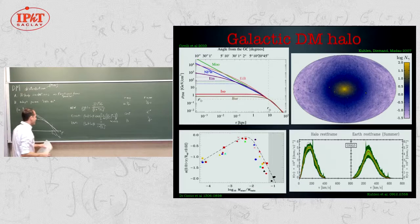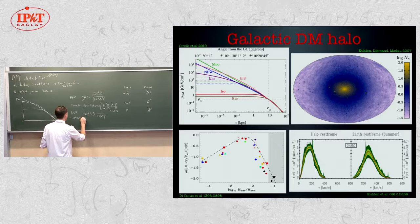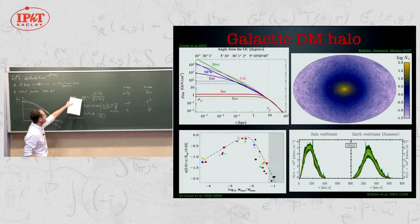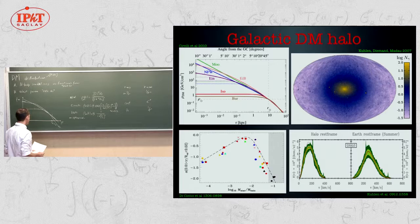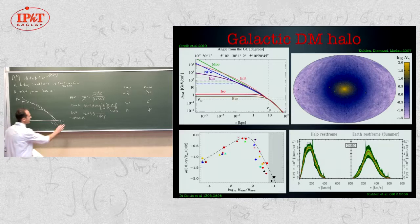A first remark: we are always assuming spherical symmetry. Numerical simulations typically end up with a spherically symmetric halo, which is why I use only r as a variable. This is consistent with current observations, although there are some hints that halos may be slightly flattened — like rugby balls — but for our purposes a spherical halo is more than a good approximation.